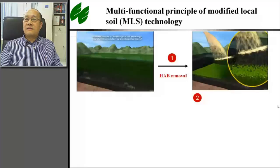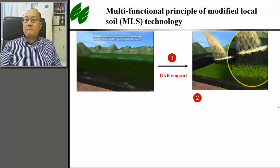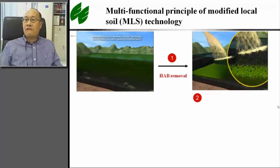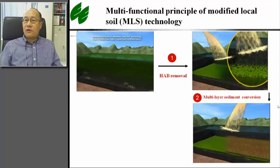This idea has been studied in my group over the last 10 years, and the modified local soil (MLS) technology has been developed. The multifunctional principle of MLS technology is that after the local soil materials are modified by various non-chemical, natural-safe products, the MLS materials can be used in an ecologically safe way to achieve multiple functions. The first function is algae removal. By spraying the soil suspension onto the bloom, the soil particles can flocculate and transfer the algae together with the nutrients from water to the sediments. Then, by applying MLS capping materials, the flocs can be buried into the sediment without getting back to the water.